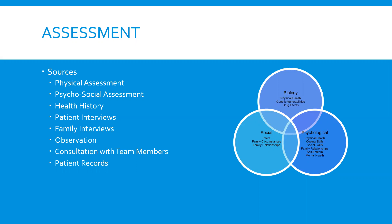Another way to approach our assessment is based on the biopsychosocial model, which talks about how there are different areas in somebody's life that can be affected by mental illness. Biologically, there can be physical effects, genetic vulnerabilities, and drug effects. Socially, we can be impacted by our peers, family circumstances, and family relationships. Psychologically, our physical health, coping skills, social skills, self-esteem, and mental health can all contribute to our experience of mental illness. As you can see by the diagram, certain aspects of the biopsychosocial model overlap, and identifying possible causes of psychiatric symptoms can drive us to different areas for treatment.